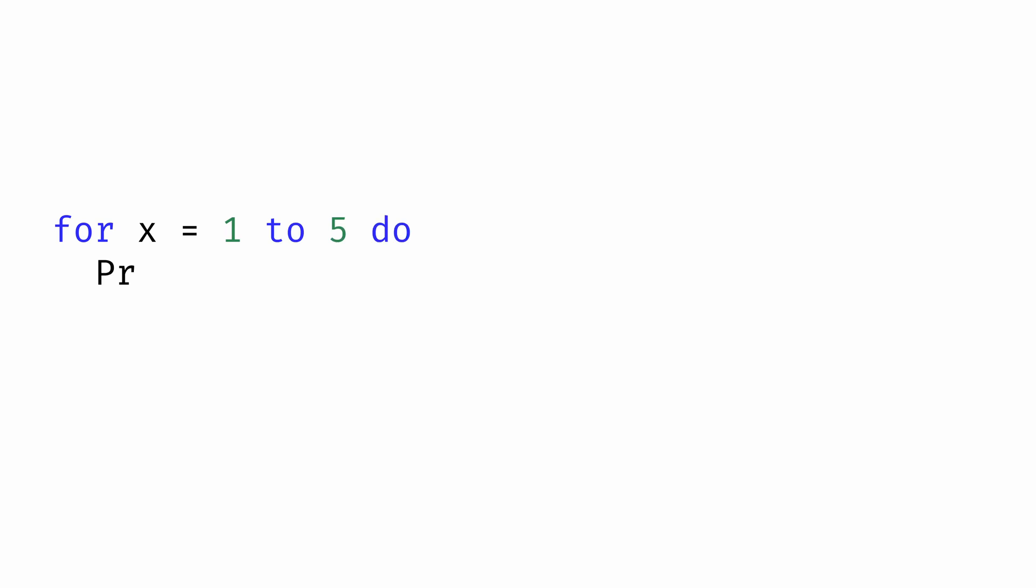So this for loop, for example, has the variable x start at 1 and count up to 5. Within the loop, we might do something, presumably something that has a side effect. Loops generally only make sense when we're working with side effects.